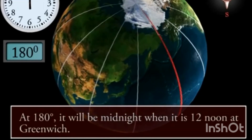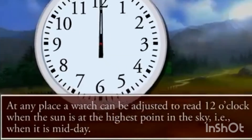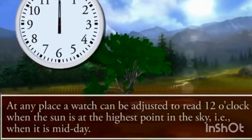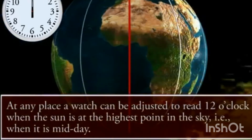At any place a watch can be adjusted to read 12 o'clock when the sun is at the highest point in the sky, that is when it is midday. The time shown by such a watch will be the local time for that place. All the places on a given meridian of longitude have the same local time.